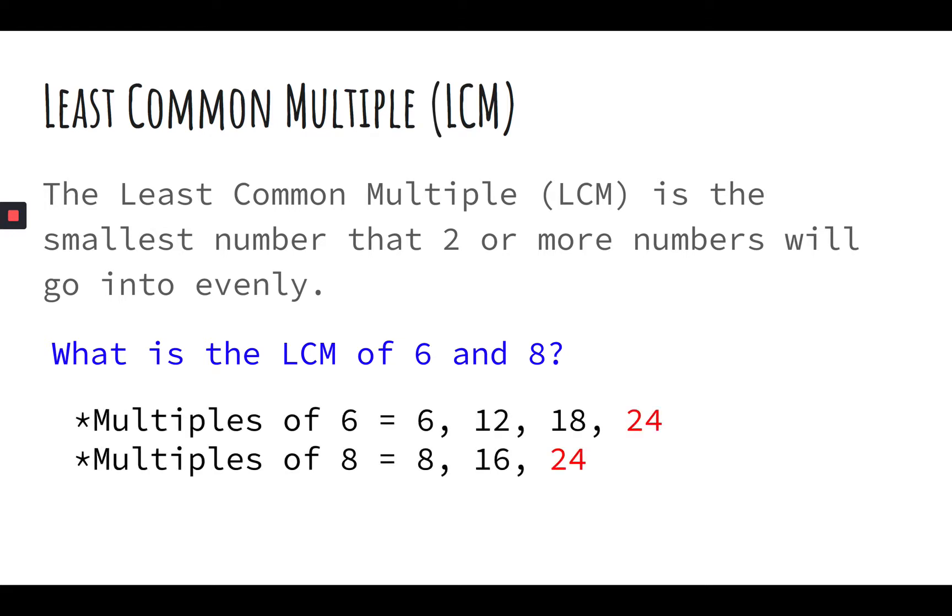Well, multiples of six are six, 12, 18, and 24. And multiples of eight include eight, 16, and there you go, 24. So the least common multiple or the LCM of six and eight is 24.